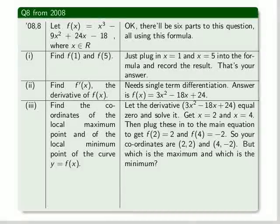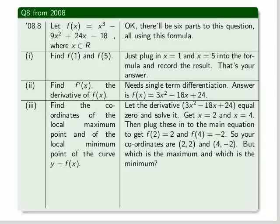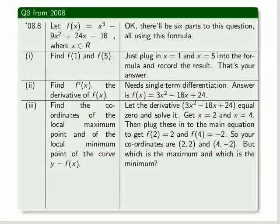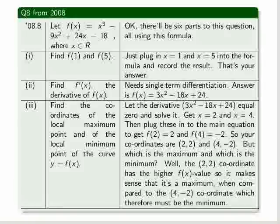The third part is the biggest part. Find the coordinates of the local maximum point and the local minimum point. What you do is you get the derivative, and you set it to 0, and you solve it. You should get 2 and 4 to be the answer. You plug 2 and 4 into the main equation, and you get 2 and minus 2 out of there. But which one is the maximum and which one is the minimum? Well, the one with the highest f of x value, the first one, must be the maximum. And the other one with f of x equal to minus 2 is the minimum.